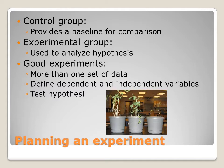A good experiment is going to have more than one set of data, so you're going to have more than one plant. This helps to remove any problems or errors that may occur — you can average a lot of data together. You're going to define dependent and independent variables and test that hypothesis. This is what planning a good experiment looks like, and we're going to work towards this during week two.